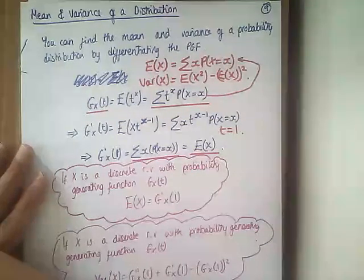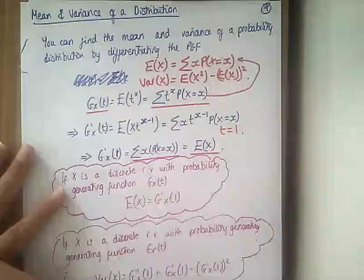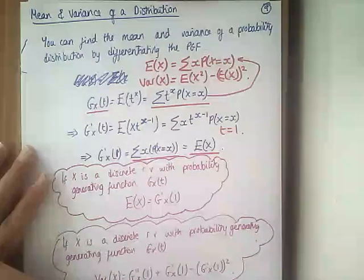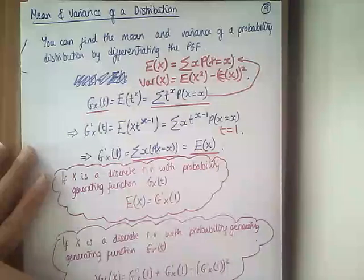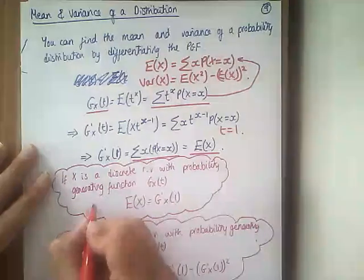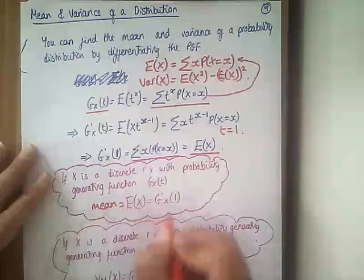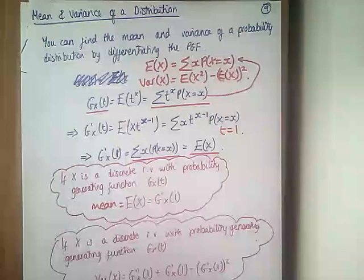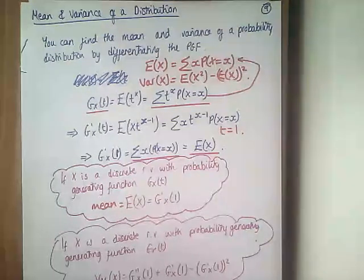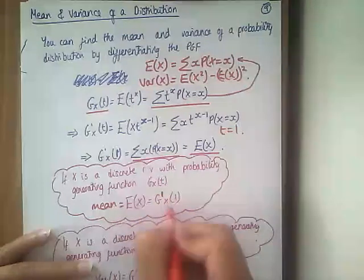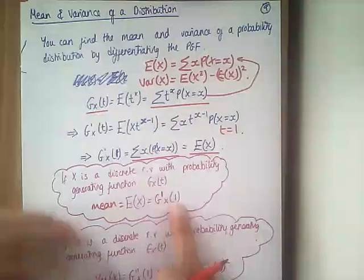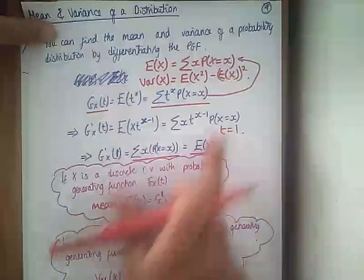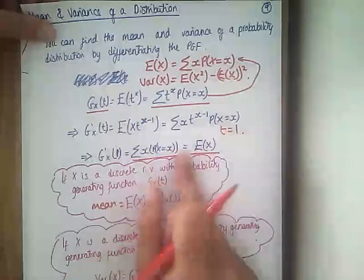So if X is a discrete random variable with a probability generating function g_X(t), then to find the mean — or E(X) as we call it — we differentiate it and substitute 1 in as our t value. So it's g'_X(1). That is important.